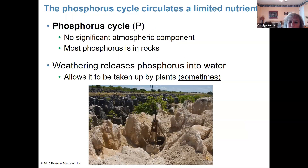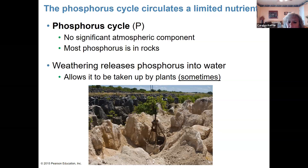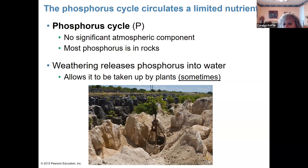Our last cycle is the phosphorus cycle, and this is the easiest one — that's why we saved it for last. Phosphorus is capital P. There is no significant amount in the atmosphere. Almost all phosphorus is tied up in rocks. Phosphorus is pretty difficult to break down; it takes a lot of weathering to do it. When it is broken down and it's no longer in the form of a rock, the phosphorus can sometimes be taken up by plants, but it's not very water soluble directly.